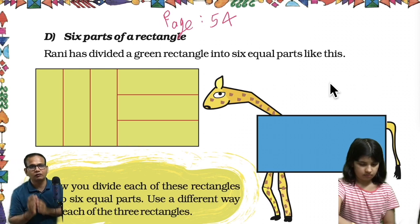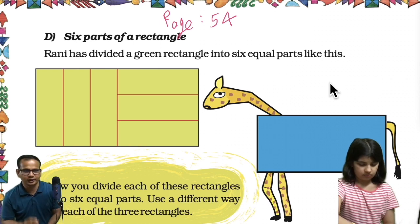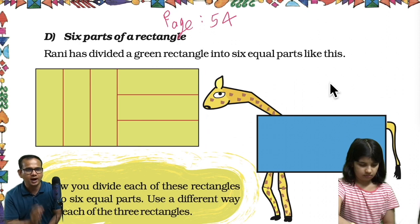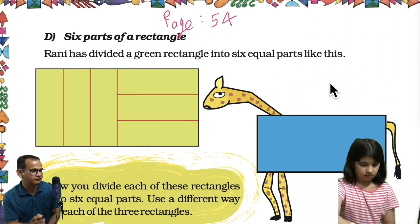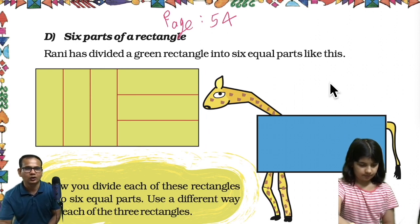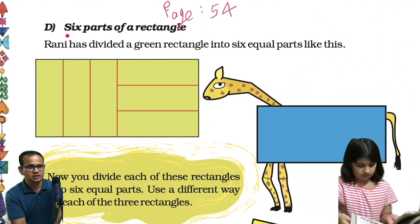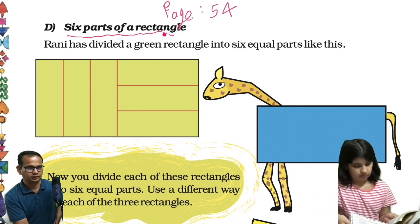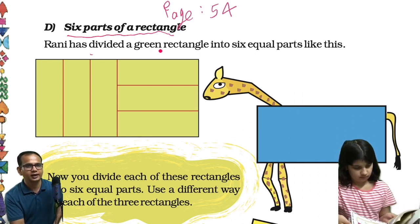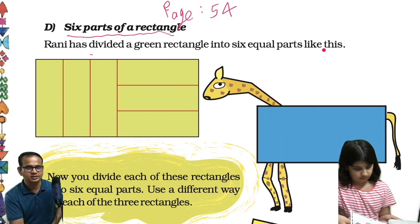Welcome back to this channel. Today we will be talking about page number 54 of Chapter 4, Parts and Wholes, of Class 5 NCERT book Math Magic. So shall we start, Avisha, without wasting further time? Rani has divided a green rectangle into six equal parts like this.